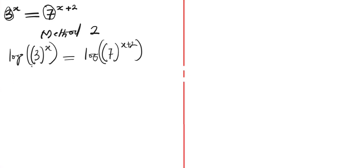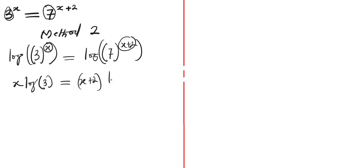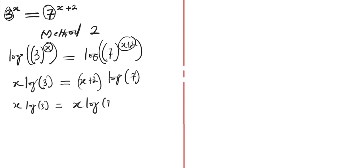According to the law of logarithms, the exponent x can come in front of the log, so we have x log 3 equals — and the exponent x plus 2 can also come in front — giving us x plus 2 times log 7. So we have x log 3 equals (x plus 2) times log 7. Expanding the bracket, we get x log 7 plus 2 log 7.